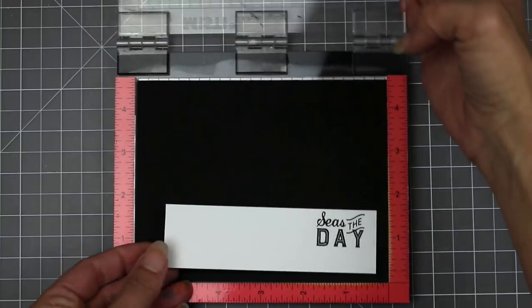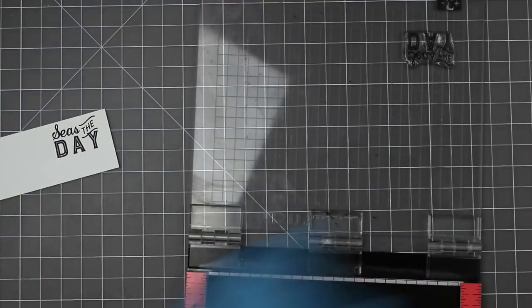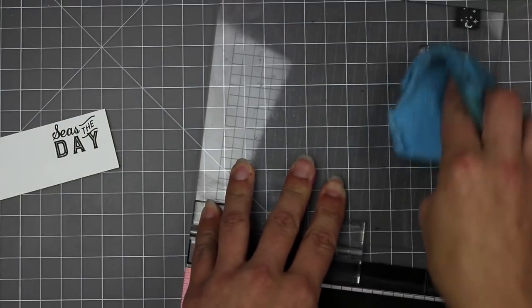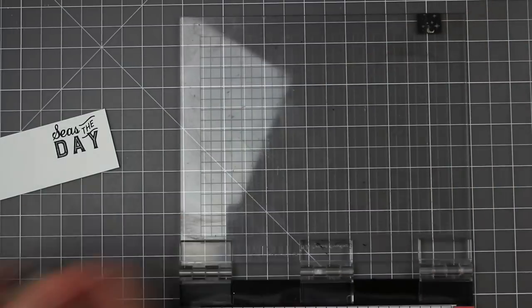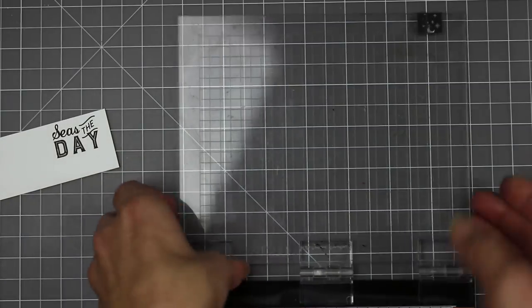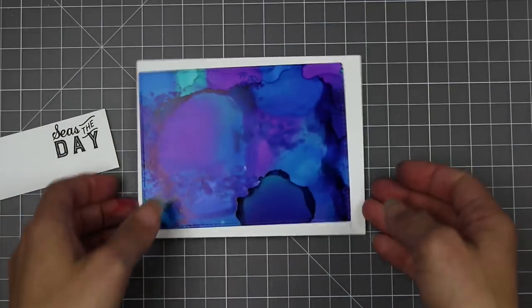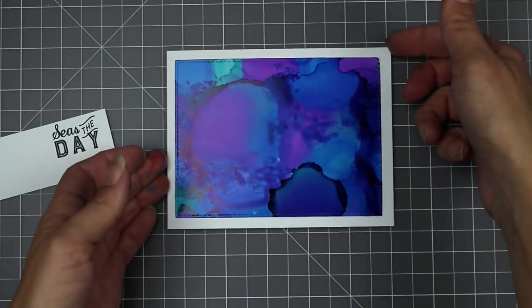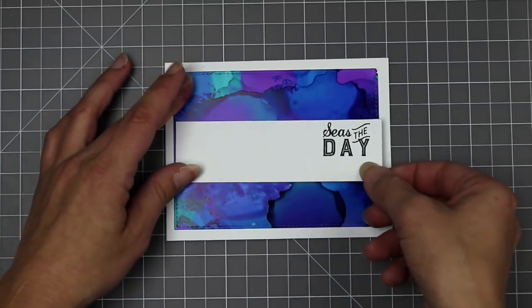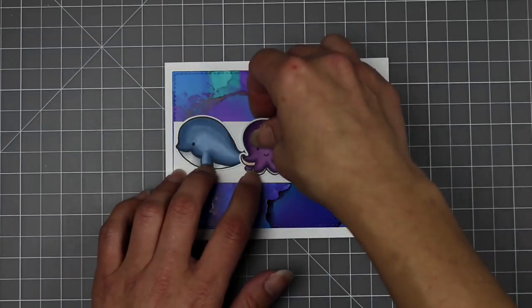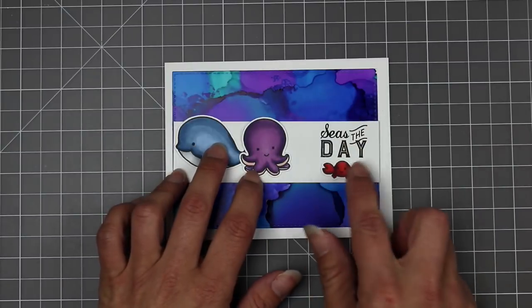So I'm using this sentiment, which is also on the Oceans of Love stamp set. And I just stamped that off in the corner. I'm going to add this white strip to the middle of my card. And then I'm going to have my critters going across. I kind of wanted them swimming in it to look like it was actually ocean water and swimming. But when I was playing around, it was just too much. Everything was kind of getting lost and the card was a little bit confusing looking.